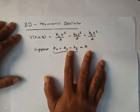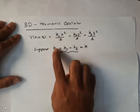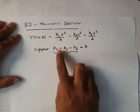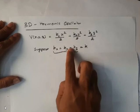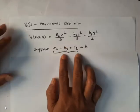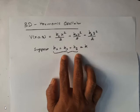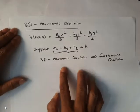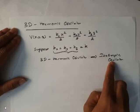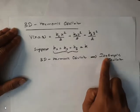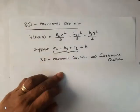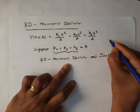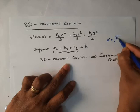Now suppose if I assume the x component of force constant, y component, and z component are all equal, you can take it as k. If these force constants are equal, we can call the oscillator — the three-dimensional harmonic oscillator — as an isotropic oscillator. Remember, in the case of isotropic oscillator, the force constants are equal; the components of force constant are equal.